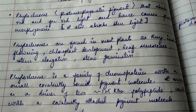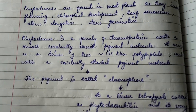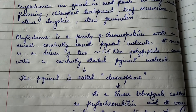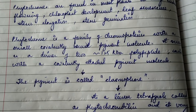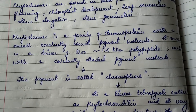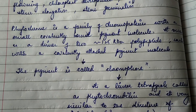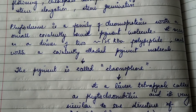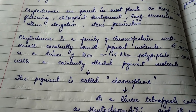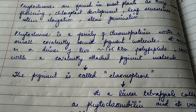Phytochrome is a family of chromoproteins with a small covalently bound pigment molecule. It occurs as a dimer of two 125 kilodalton polypeptides, each with a covalently attached pigment molecule. This pigment molecule is referred to as the chromophore.